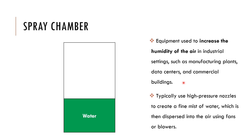Spray chambers are a type of equipment used to increase the humidity of air. They normally use high pressure nozzles to create a fine mist of water — simply spraying water into a mist — which is then dispersed into air using fans or blowers.